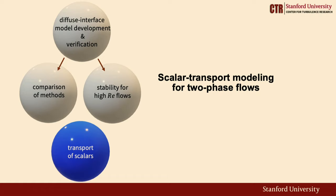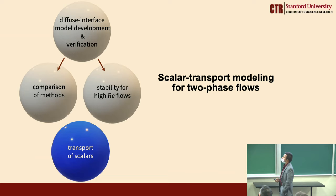The final section covers scalar transport modeling for two-phase flows, which has a wide range of applications. In electrochemical systems, bubbles generated at electrodes are surrounded by ionic species — a classic example of scalar transport in two-phase flow. Other applications include scalar surfactant transport and dissolved salts in oceans, which inhibit bubble collisions and cause ocean foam formation, and thermal transport in two-phase microchannels where temperature is the scalar of interest.